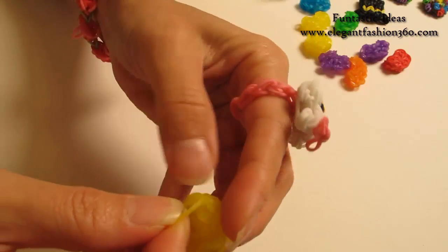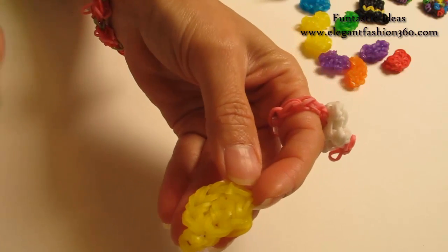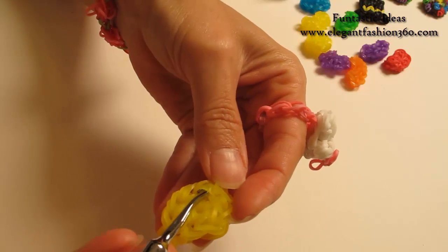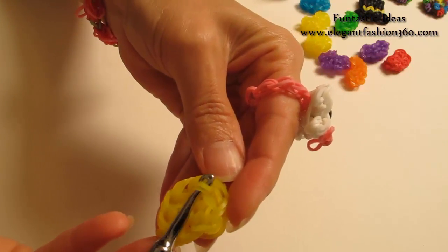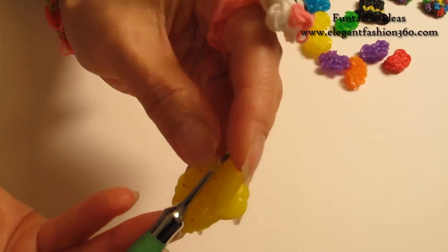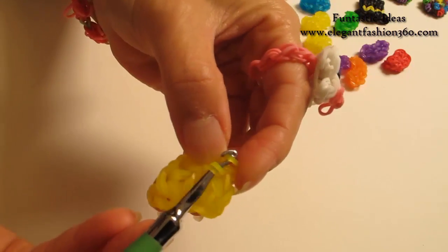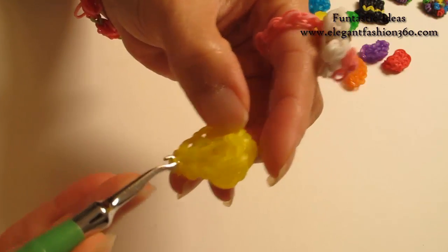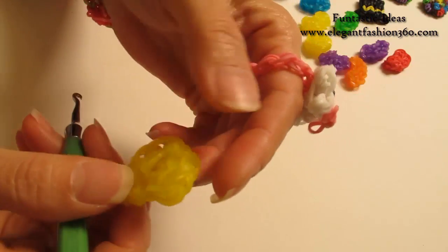If you have a C-clip, it would be a good idea to use the clip to keep it secure. If you don't, you can put your hook through here, put the secure band on your hook, grab it through, tuck it underneath here, so it will hold it for us.